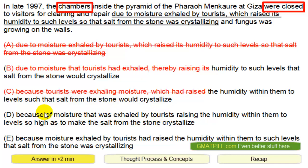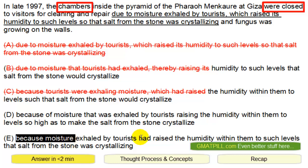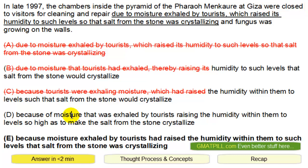So the chambers were closed because of moisture that was exhaled. The chambers weren't closed because of moisture — they were closed because moisture was doing something. So it seems like because moisture exhaled by Taurus had raised the humidity within them, basically within the chambers, to such levels that salt from the stone was crystallizing. In 97, the chambers were closed because moisture had raised the humidity within the chambers to such levels that salt was crystallizing. That generally seems okay — so E is the answer.